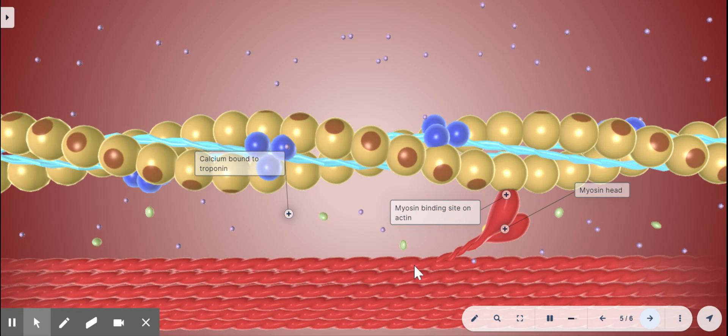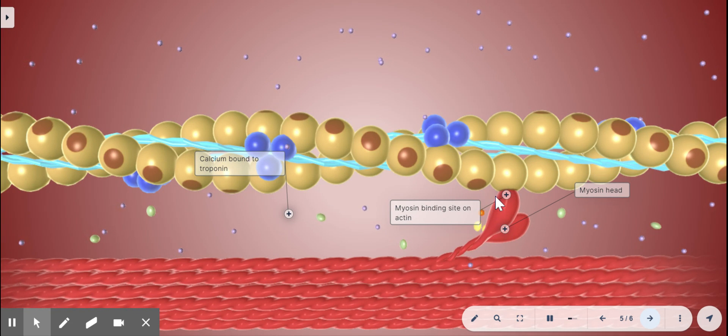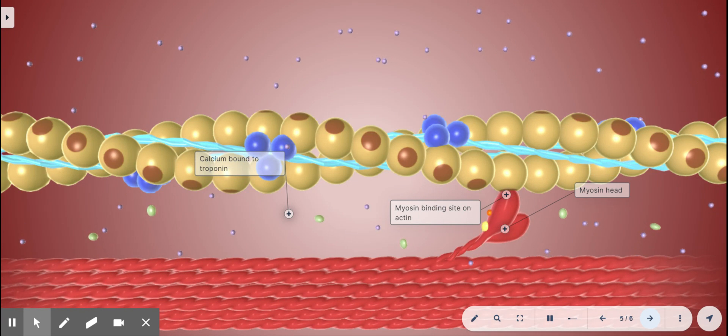The myosin heads along the thick filament are energized with ADP and a phosphate group. And so, the myosin head will actually bend up and bind to the myosin binding site on the actin. And this forms what's called an actin-myosin crossbridge.